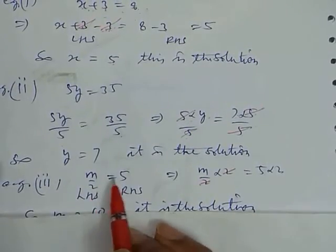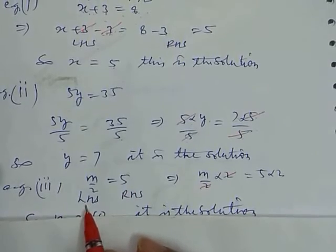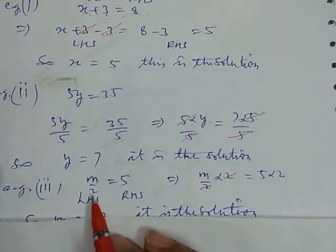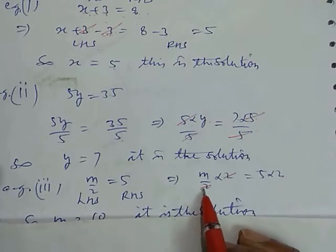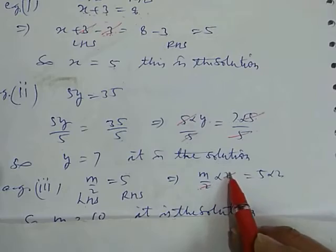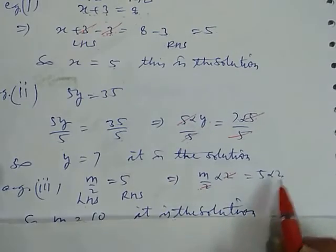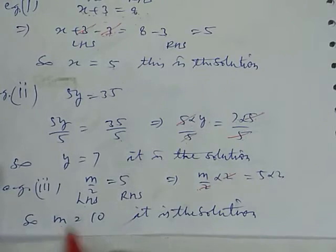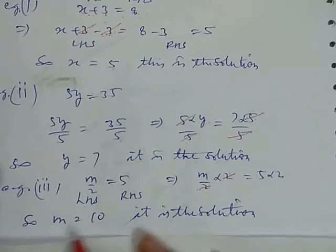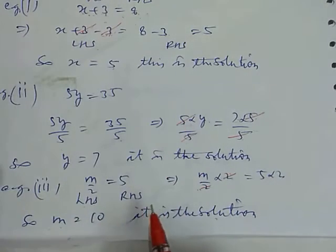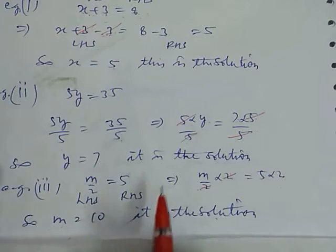Next example: m divided by 2 equals 5. Here, the numeral is in the division. So we remove it by multiplying. We want to remove 2, so we multiply both sides by 2. This 2 cancels out, and 5 times 2 gives us 10. So m equals 10. This is the solution. We take these steps to separate the variables.